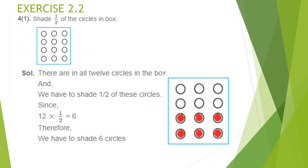Shade 1/2 of the circles in the box. Total, how many circles are there? There are 12 circles. We have to shade half of them. Half of 12 is 6. In mathematical form, we write 12 × 1/2, which equals multiplication of a fraction by a whole number: 12 × 1 ÷ 2 = 6. So we have to shade 6 circles.